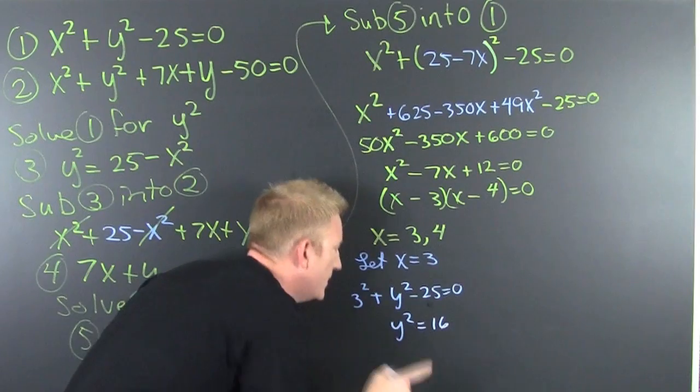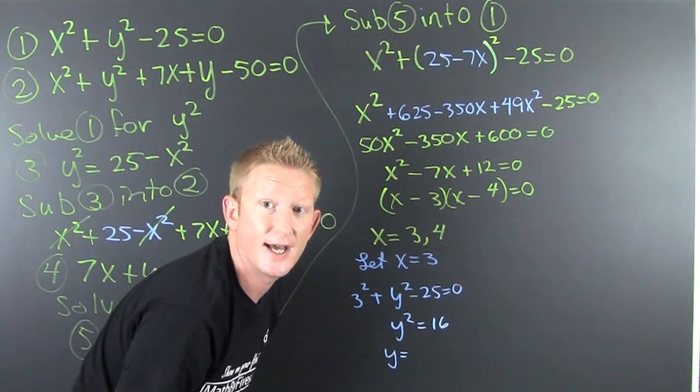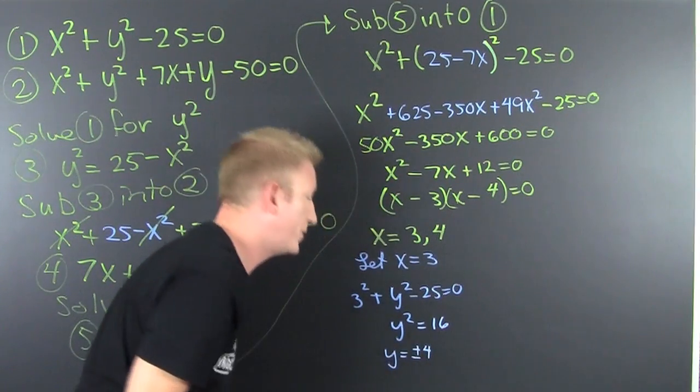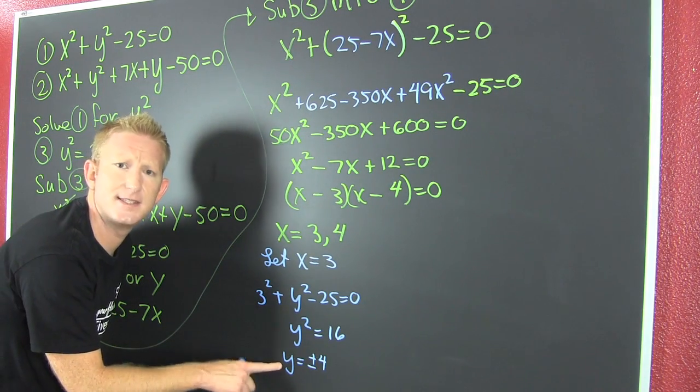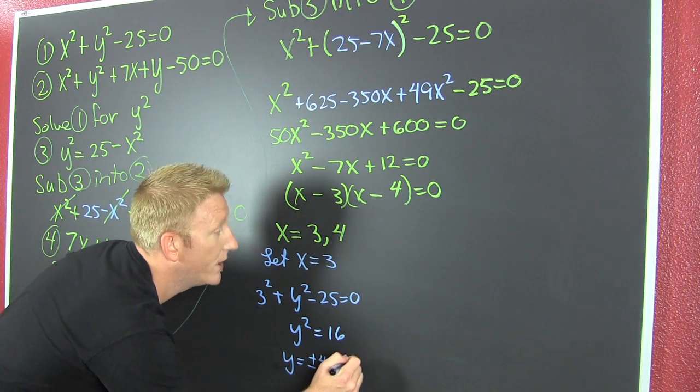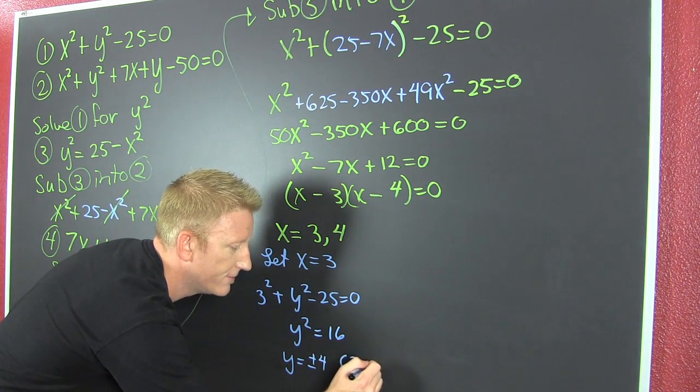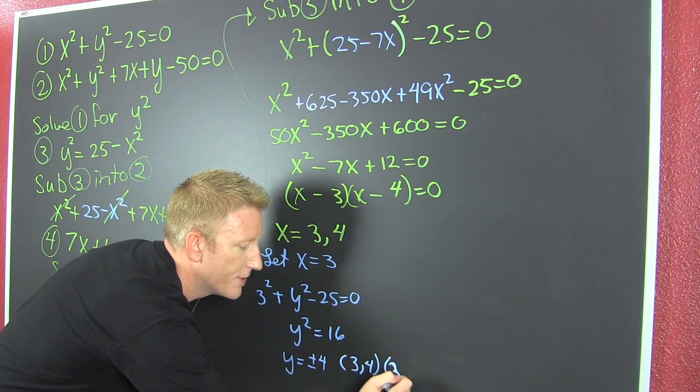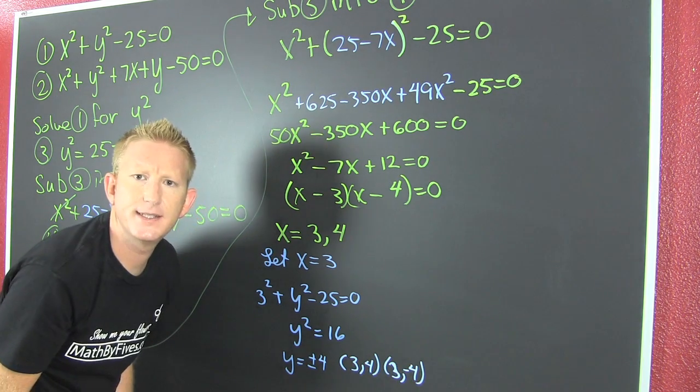So y is gonna be, you take the square root of both sides but you're not gonna forget that plus or minus 4, and that results in two different solutions. That says when x is 3, y is 4, and when x is 3, y is minus 4. That's curious, but we'll explore our curiosity later.